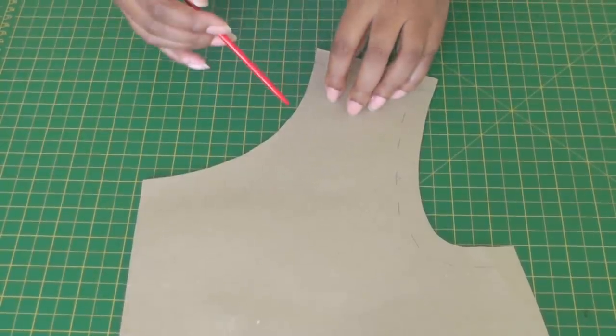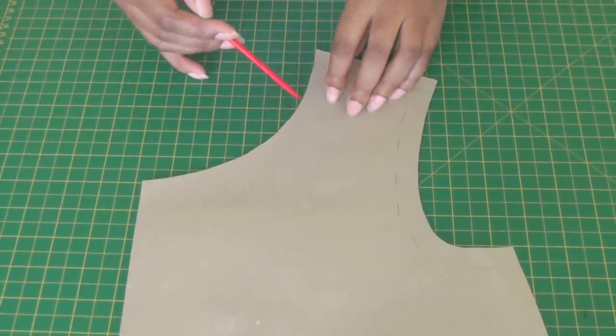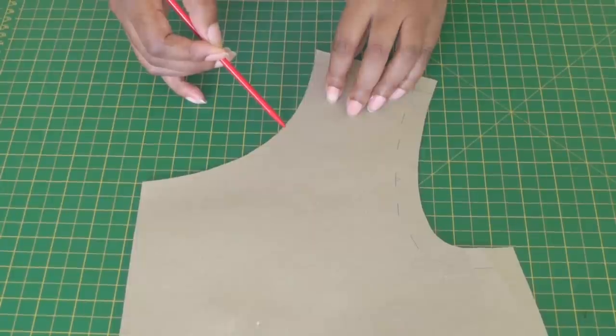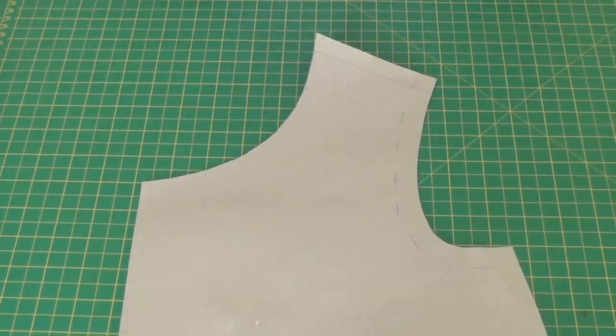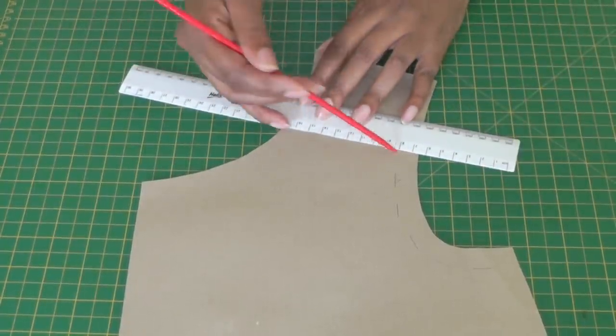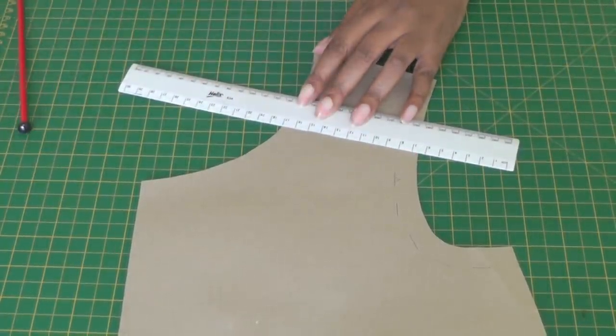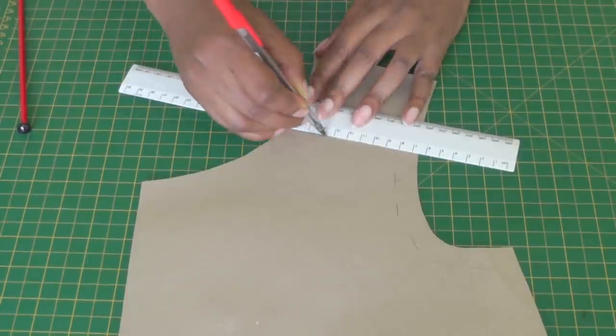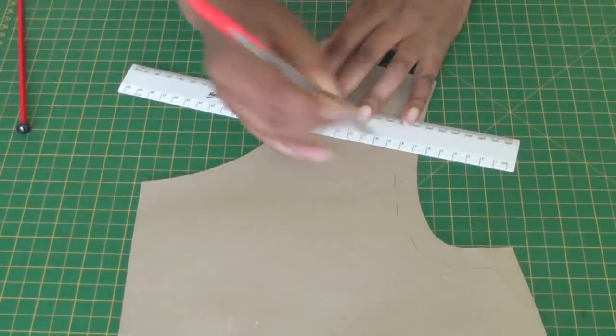So once you've decided where the gaping is happening on your neckline, say here for example, then you need a straight ruler, place it at that point and draw a straight line from here into the armhole. Straight line right across like so.